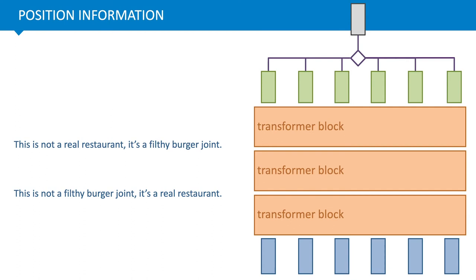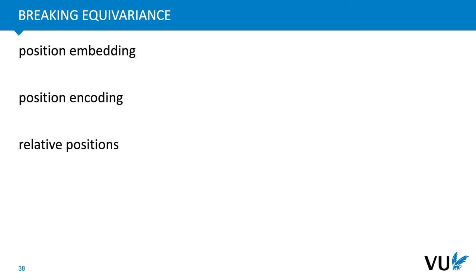Another problem is the lack of sequential structure in self-attention. The meaning of a sentence often depends on the exact ordering of words. For instance, two restaurant reviews using exactly the same words but in different orders mean the exact opposite. If we feed these through a classification transformer for sentiment classification, the output vectors are the same for both sentences except in a different order, and since global pooling sums them all together, we get the same output label for both. To allow the transformer block to see sequential structure, we need to break this equivariance by communicating the position of the input tokens. We'll look at three ways: position embeddings, position encodings, and relative positions.